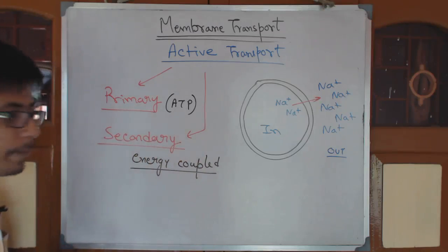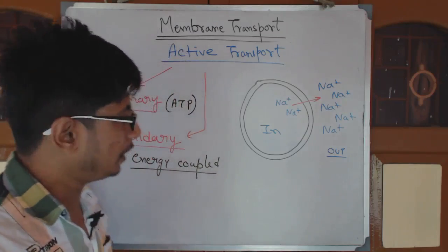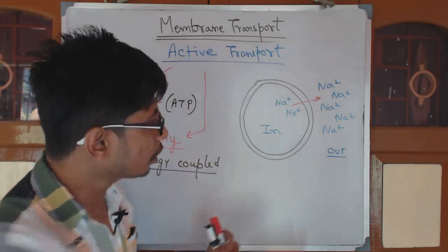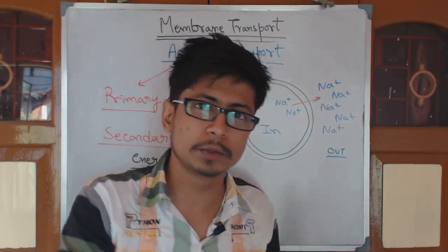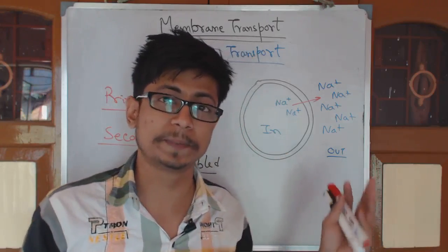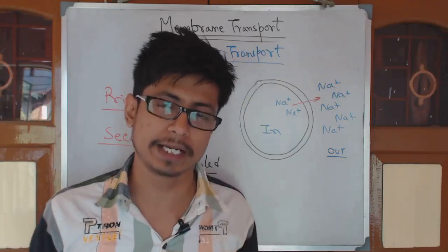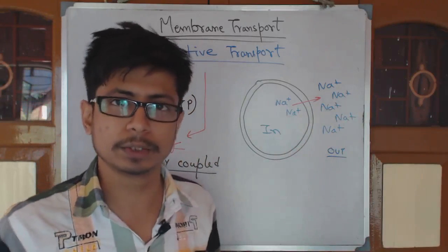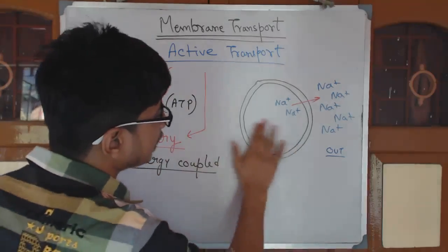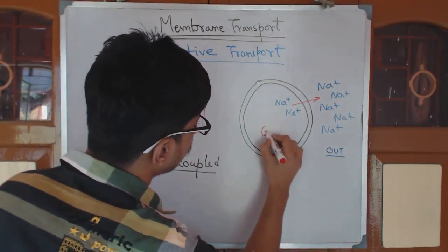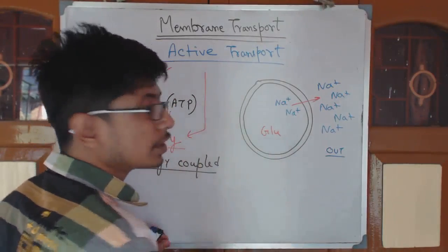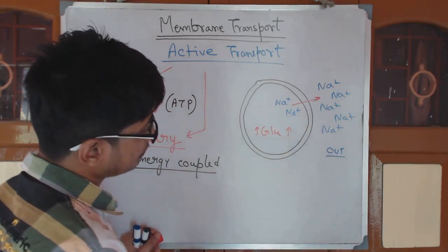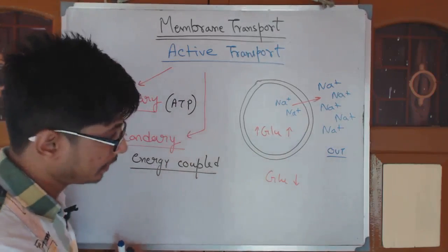In secondary active transport, also called energy-coupled, we sometimes need to drive molecules like glucose inside the cell. Glucose is very important — no matter whether glucose is present in low or high amounts in the extracellular space, the cell always wants to take glucose inside, either to store it or to burn it to produce energy. Let us say the concentration of glucose is high inside the cell and very low outside.